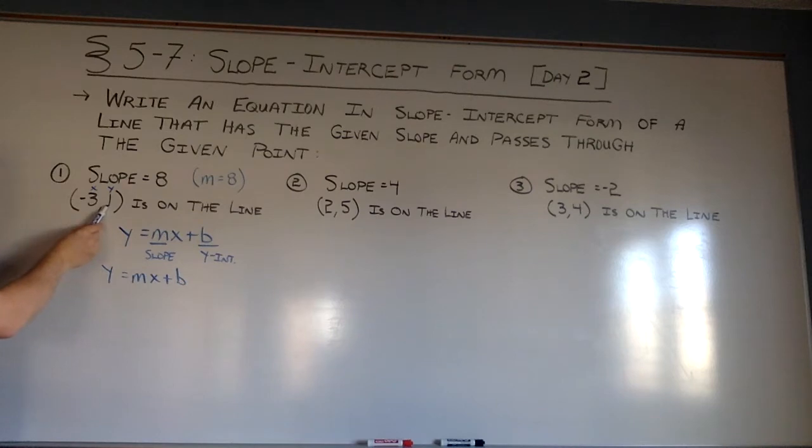I'm going to take the second numerical value here, y, which is 1, will equal m, which I'm told is 8, times x, which is negative 3, and then I need to find b, the y-intercept. So 1 will equal 8 times negative 3, negative 24 plus b, and then the last step to get b alone is to undo subtracting minus 24 with adding 24 to both sides. 1 and 24 makes 25 is the y-intercept.